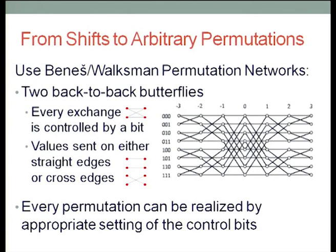To get generic permutations from cyclic shifts, we use the classic results from the 1960s of Beneš and Waksman about permutation networks. These are two back-to-back butterfly networks. A butterfly network consists of many exchanges, each with two straight edges and two cross edges. Level 1 exchanges elements at distance 1, level 2 at distance 2, level 3 at distance 4, and so on. Beneš and Waksman showed that by setting a control bit for each exchange — choosing cross or straight edges — you can implement any permutation.